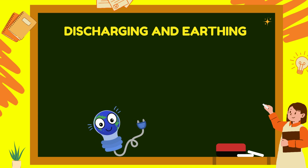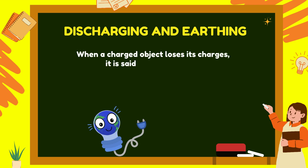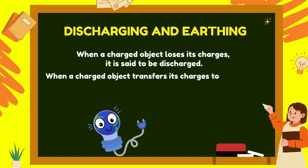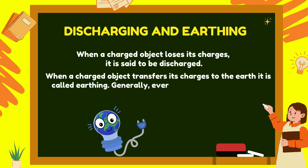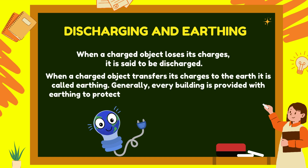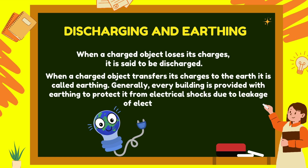Discharging and earthing: When a charged object loses its charges, it is said to be discharged. When a charged object transfers its charges to the earth, it is called earthing. Generally, every building is provided with earthing to protect it from electrical shocks due to leakage of electric current.